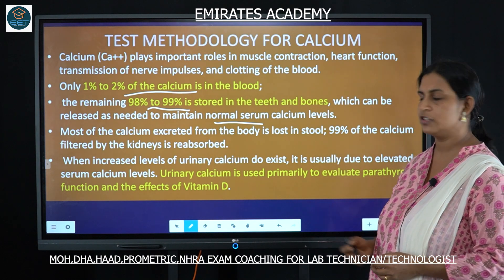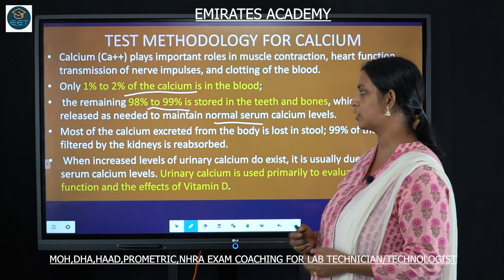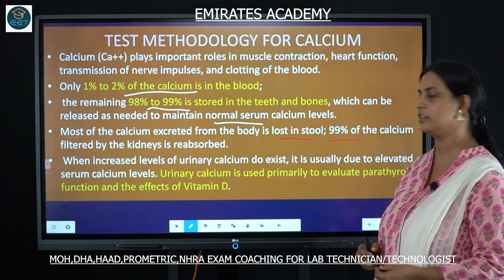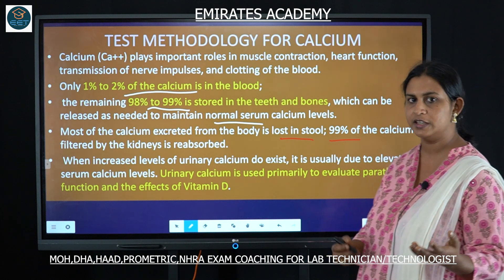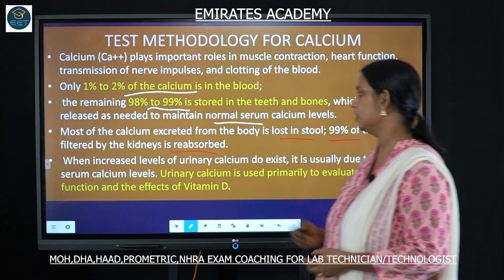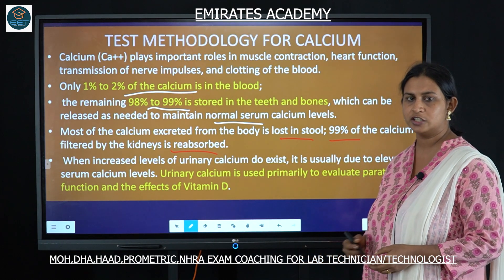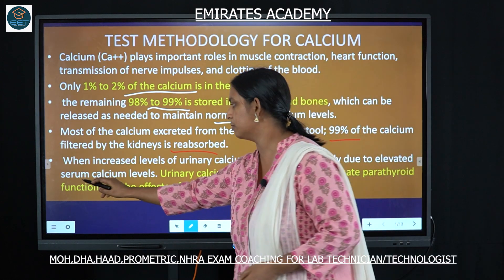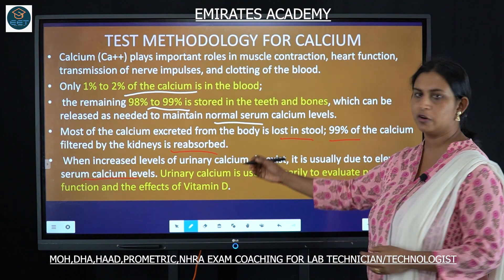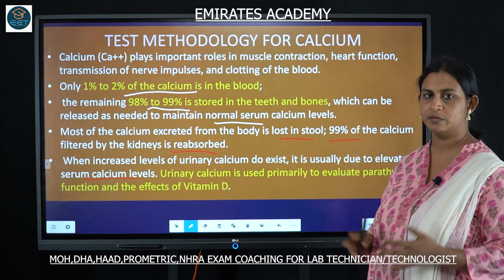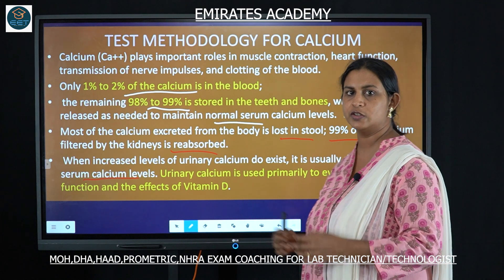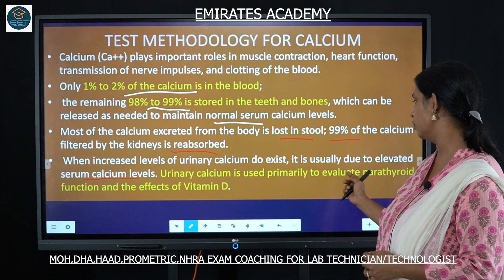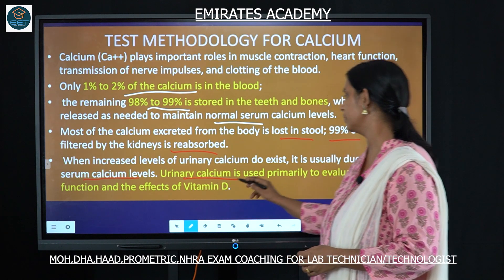Most calcium excreted from the body is lost in the stool, whereas around 98–99% is filtered by the kidneys and reabsorbed. When there is an increased level of calcium in the urine, this is due to elevated serum calcium levels caused by certain disorders.